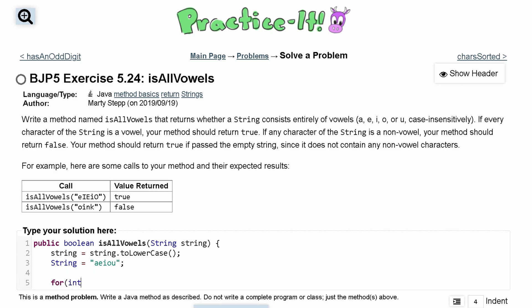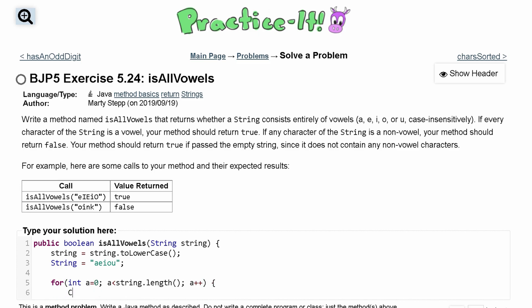We're going to have a for loop because we want it to go through the entire word. We have int a equals zero, and the reason why we're using a for loop, not like a while loop, is because every time this iterates, we're going to increment through the index. So a is less than the string dot length, we're going to do a plus plus to increment this the entire time.